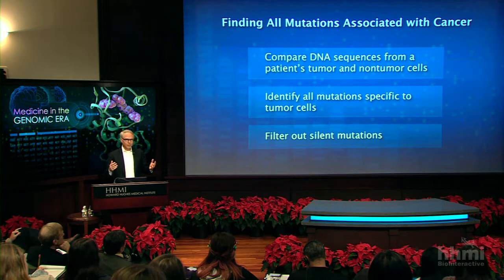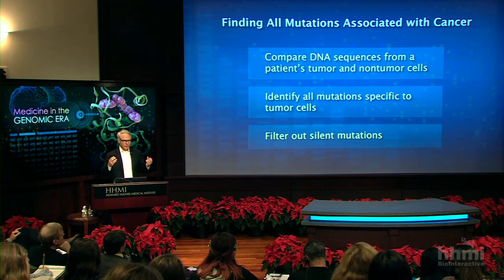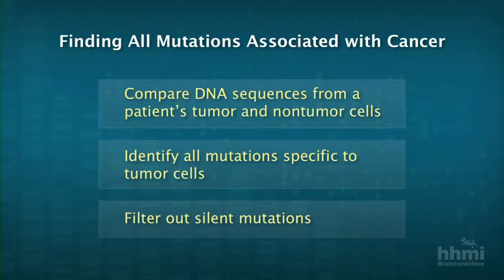The idea is to sequence the DNA from a patient with cancer — sequence the tumor DNA as well as the non-tumor DNA to identify all the mutations that are found only in the tumor DNA and not in the patient's matching normal DNA, and then to filter out the silent mutations and see what's left. So what's the scope of this big project?